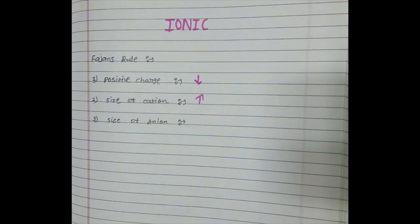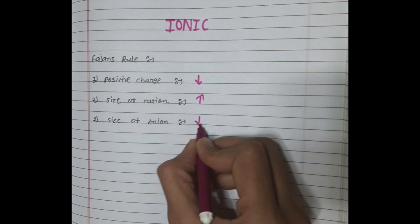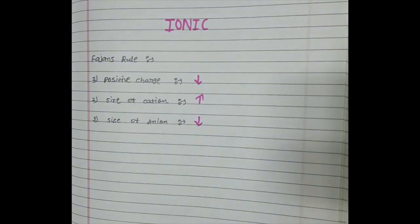Next is the size of anion. We know that the covalent character depends on the size of anion being more. But for the ionic compound, the size of the anion is decreased. So these three terms — positive charge less, size of cation more, and size of anion less — are how we find out which compound is most ionic and which compound is less ionic.